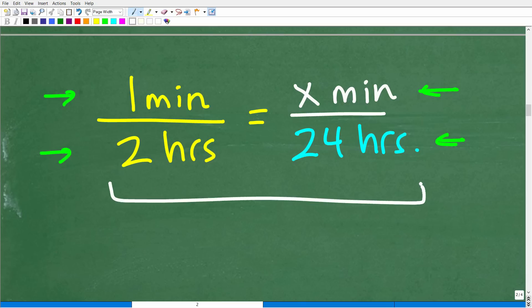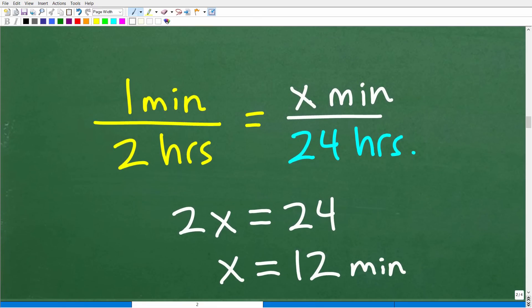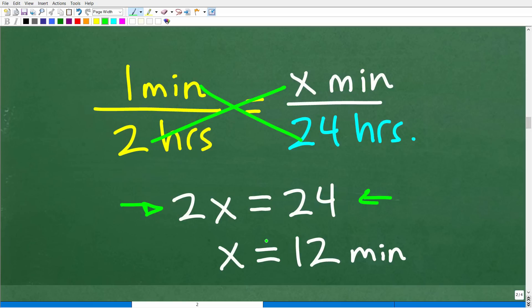But what we could do here is solve this proportion. We have one minute over two hours equal to x minutes over 24 hours. So we're going to set up a proportion and solve for x. So here we have one over two equal to x over 24. We're going to use the cross products and cross multiply. So x times two is 2x and one times 24 is 24. And then using some simple algebra, we can solve for x by dividing both sides by two. So x is equal to 12 or 12 minutes.